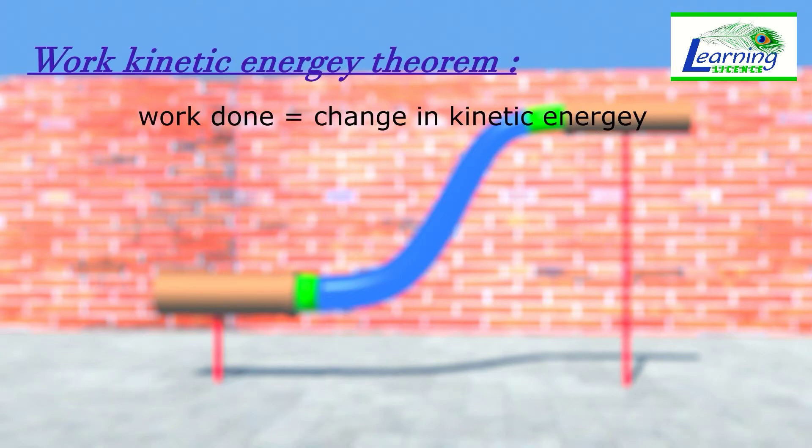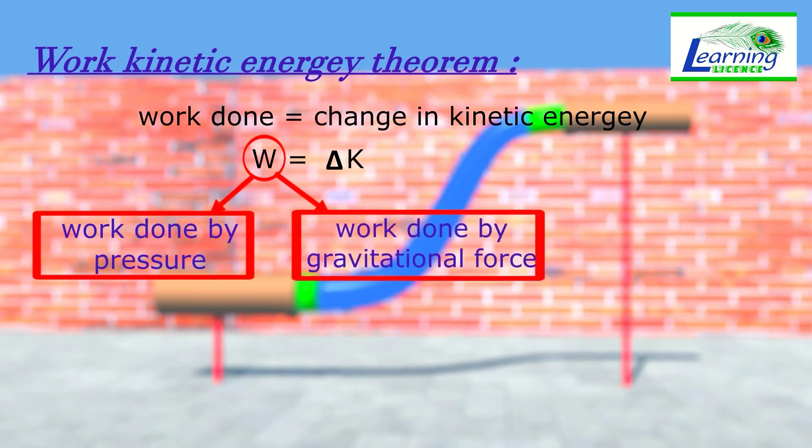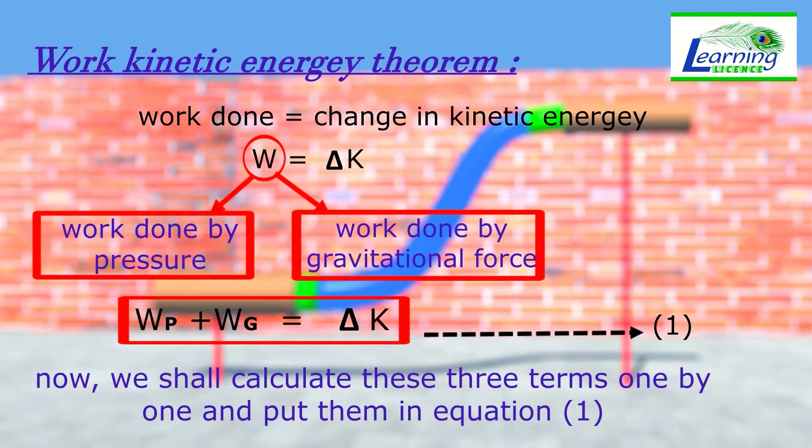This states that work done on a system by external forces is equal to change in its kinetic energy. Two forces are acting on the fluid section: one is force due to pressure and the second is gravitational force. So the net work on the fluid will be sum of works done by these two forces separately. Now we shall calculate these three terms one by one and put them back in equation 1.